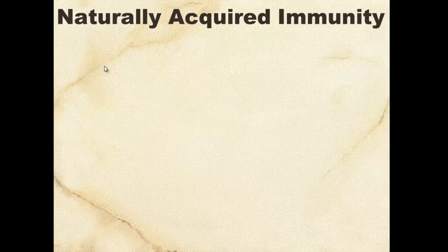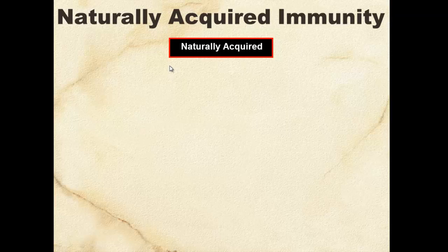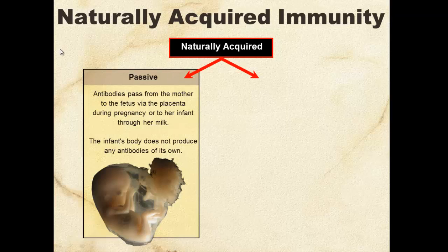Let's have a look at some examples. First, let's consider naturally acquired passive immunity. Naturally means the body does it by itself, and passive means we're not producing the antibodies ourselves — we're getting them from our mother, either through the placenta during pregnancy or through breast milk after the baby's born.